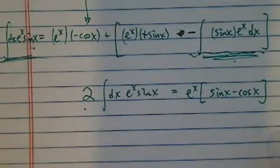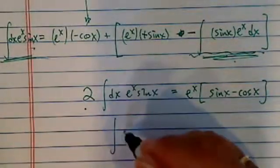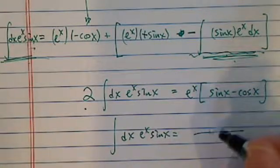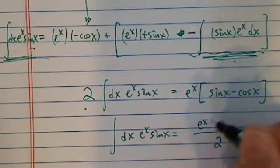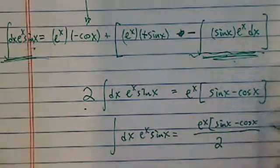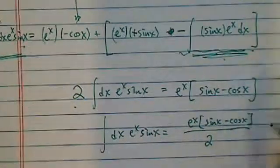Then one more step and we're done. Therefore, the integral dx e^x sine x is equal to half of e^x times sine x minus cosine x.